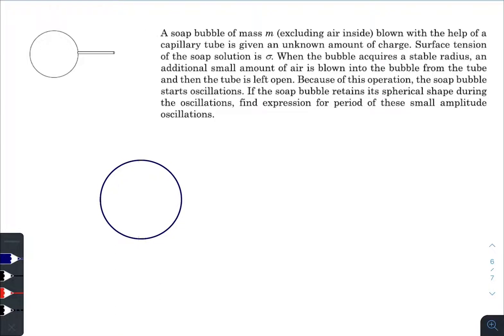Let us draw the equilibrium situation first. Let the radius be R, let the surface tension be sigma as given in the question. Let us consider sigma naught as the surface charge density. We know that excess pressure inside a soap bubble is four times surface tension divided by radius.